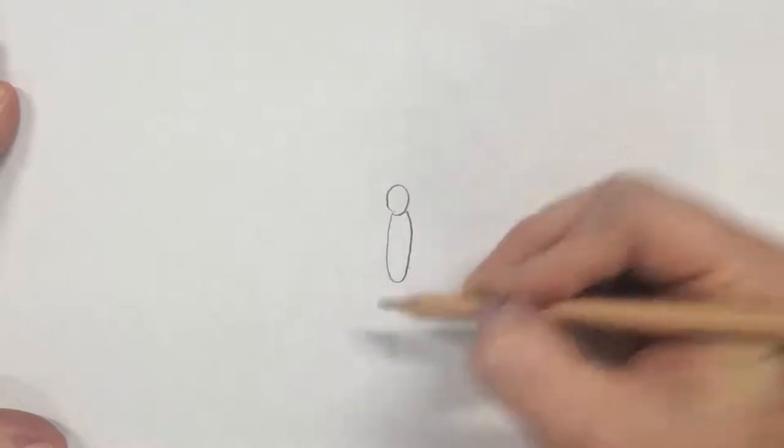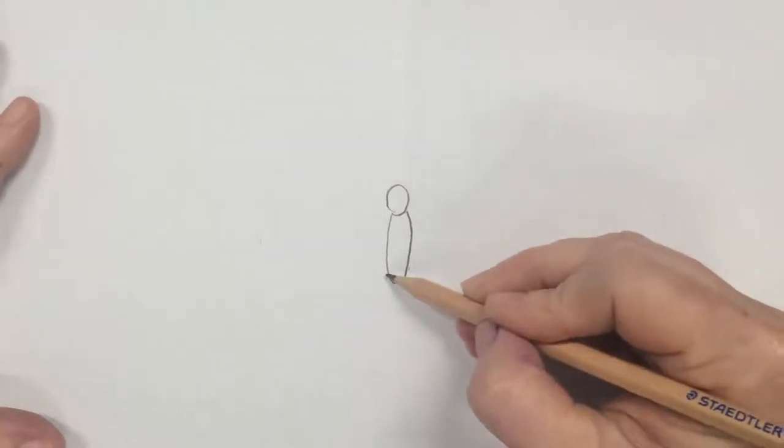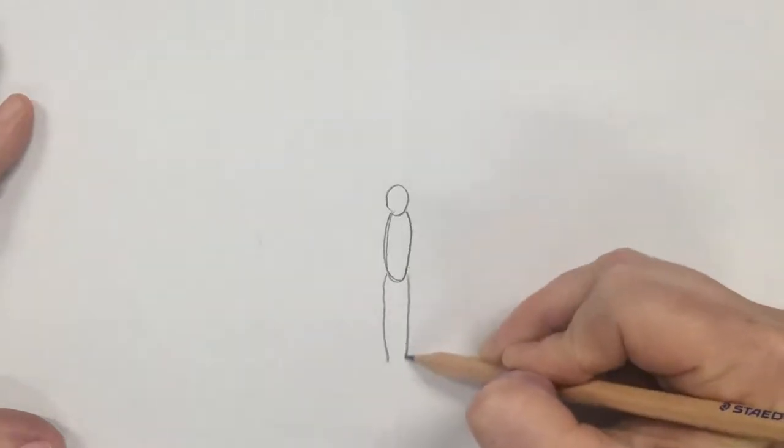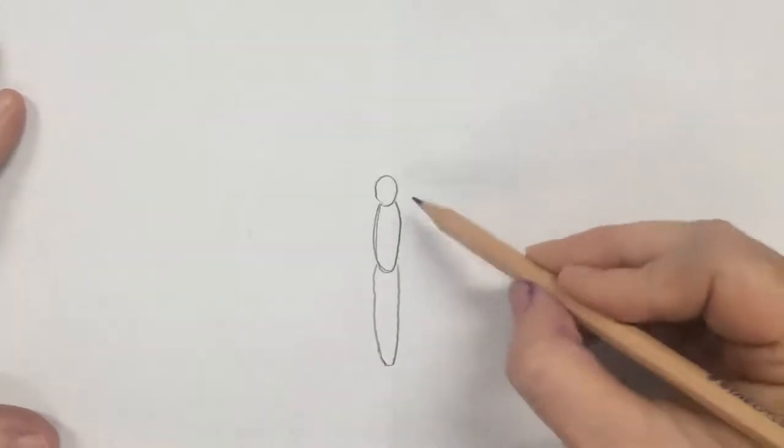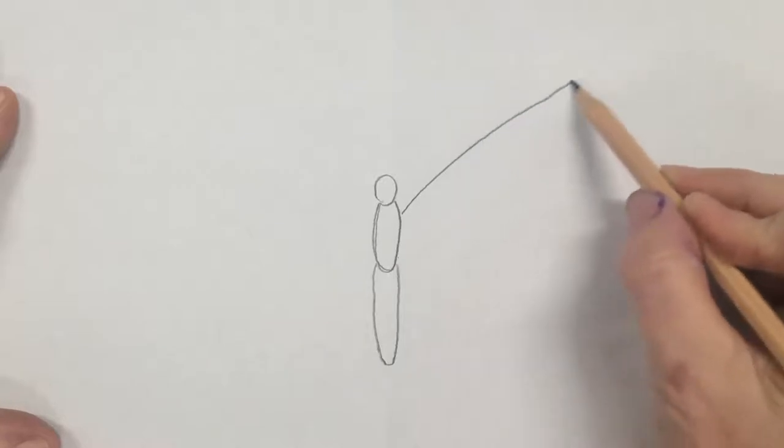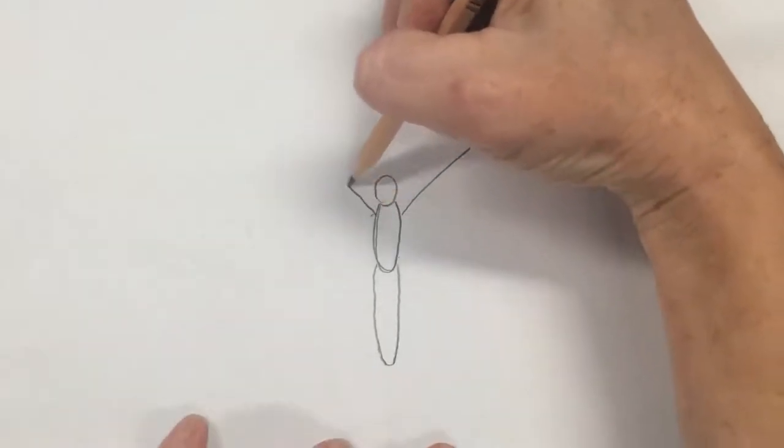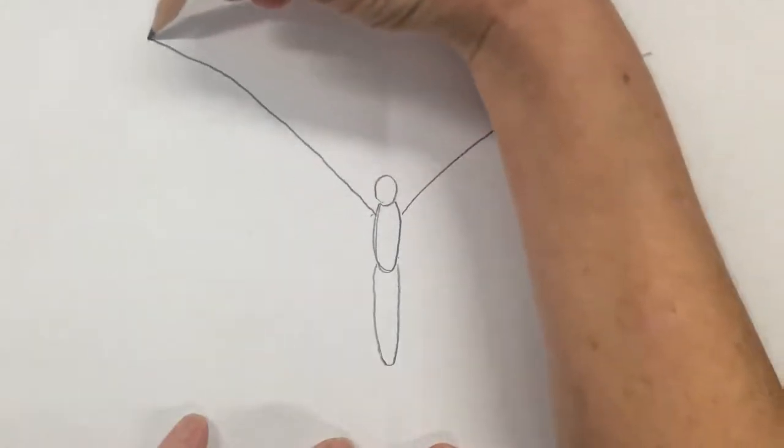Head, thorax like a sausage, well maybe a bit rounder, and abdomen a bit longer. Do one big long line going up this way, and another one the other way.